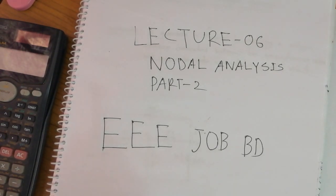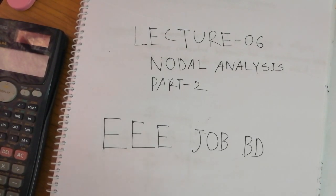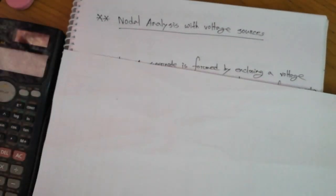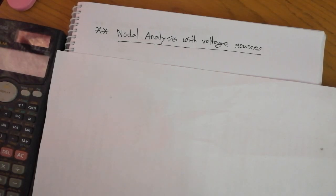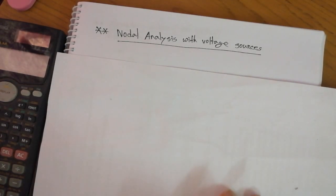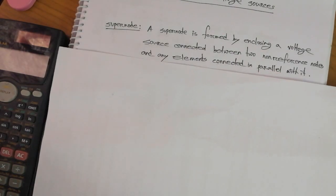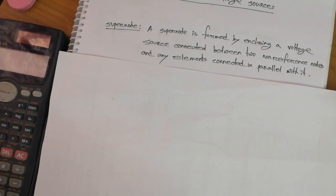If you have noticed, these two parts work together. Nodal Analysis with Voltage Sources — a formula applies for us to know the super node. A super node is formed by enclosing a voltage source connected between two non-referenced nodes and any element connected in parallel with it.